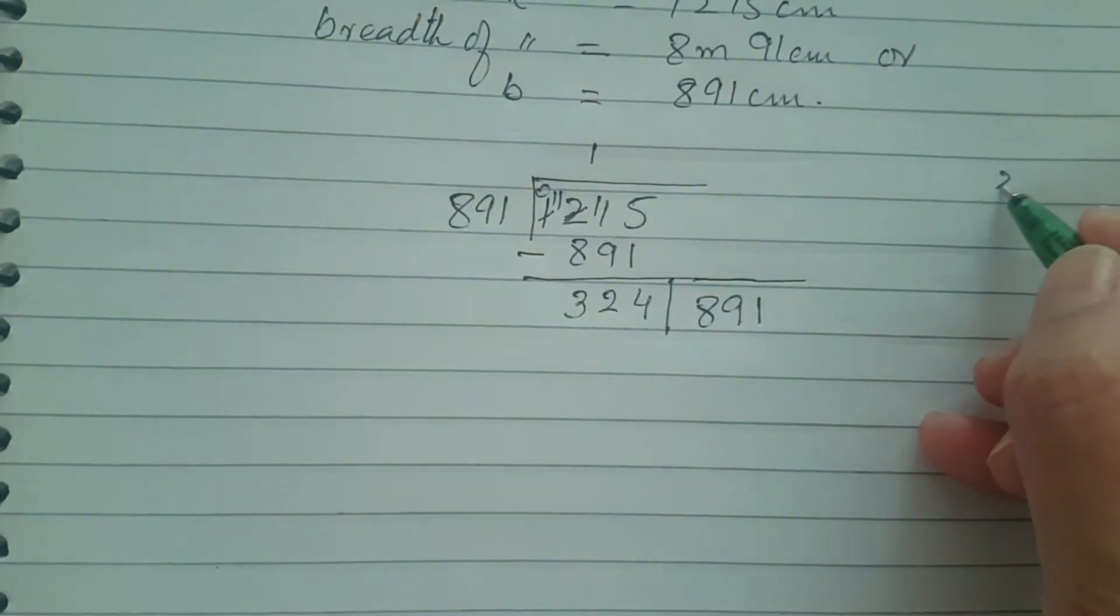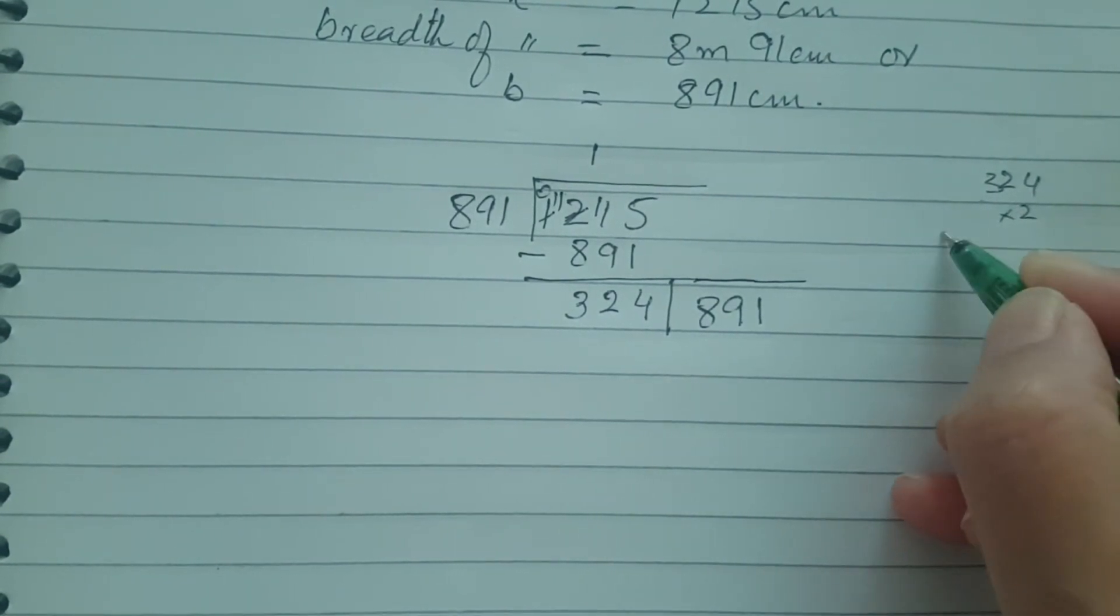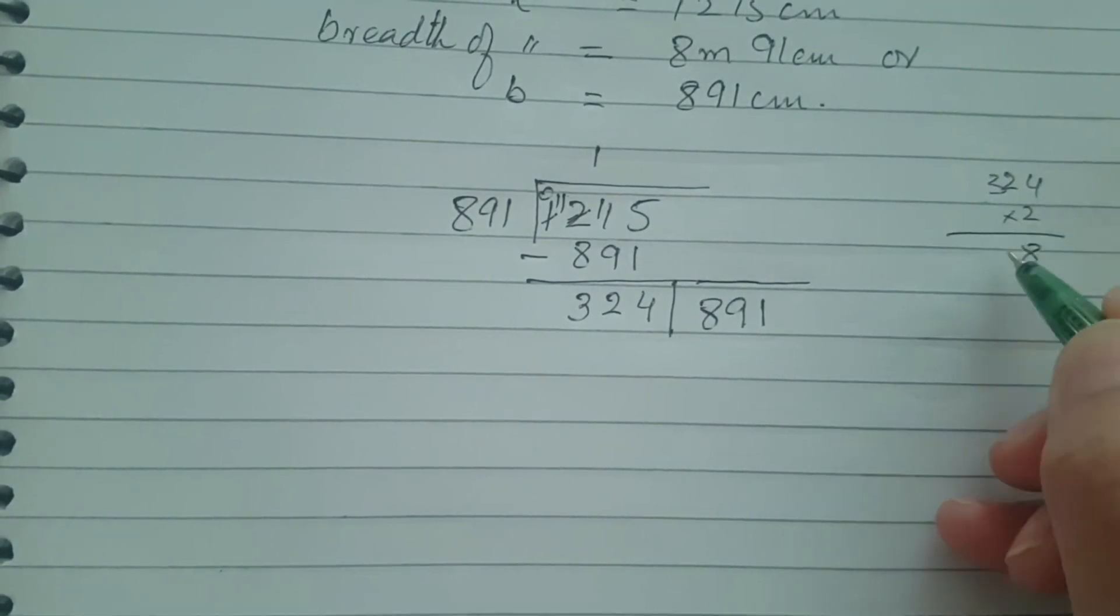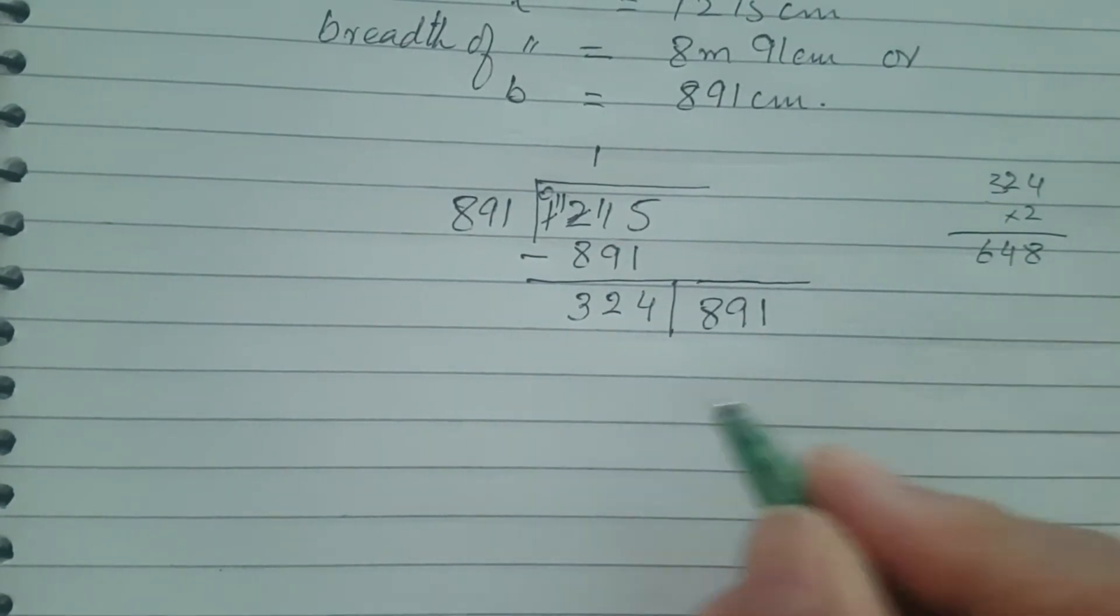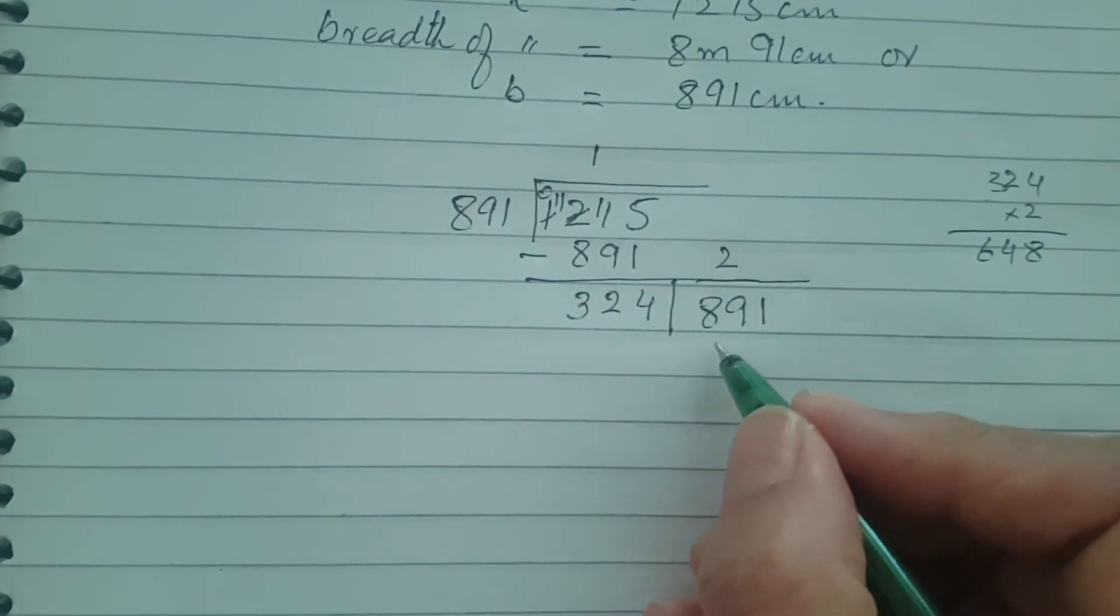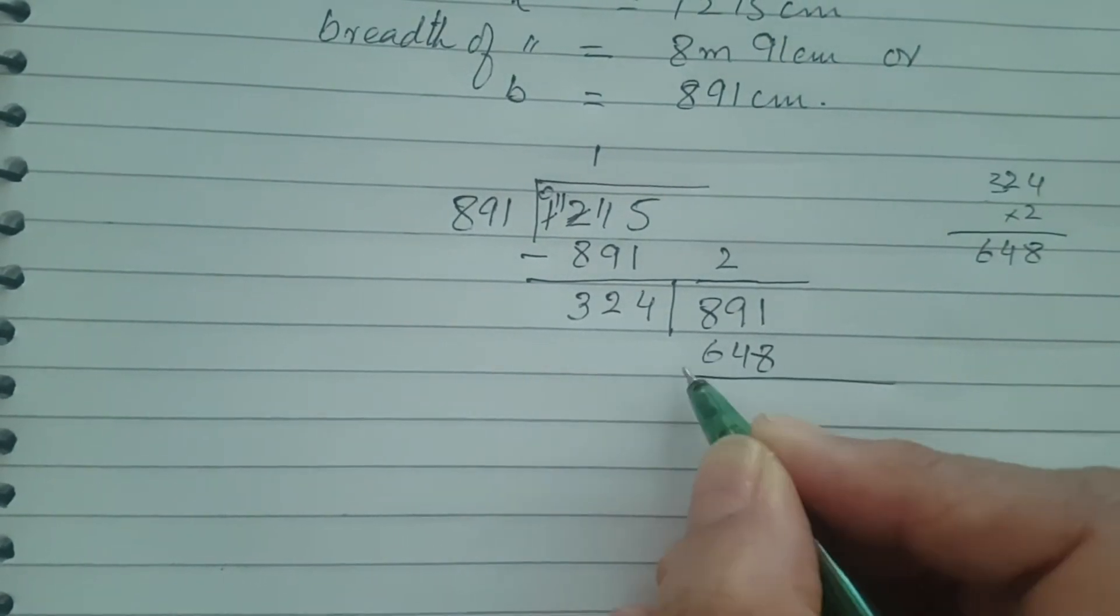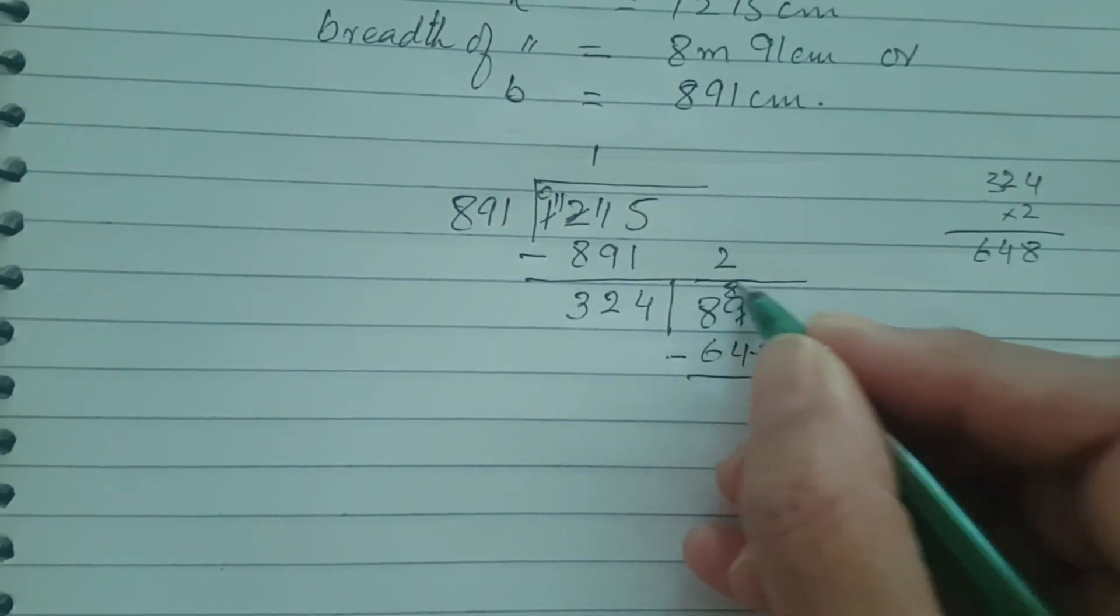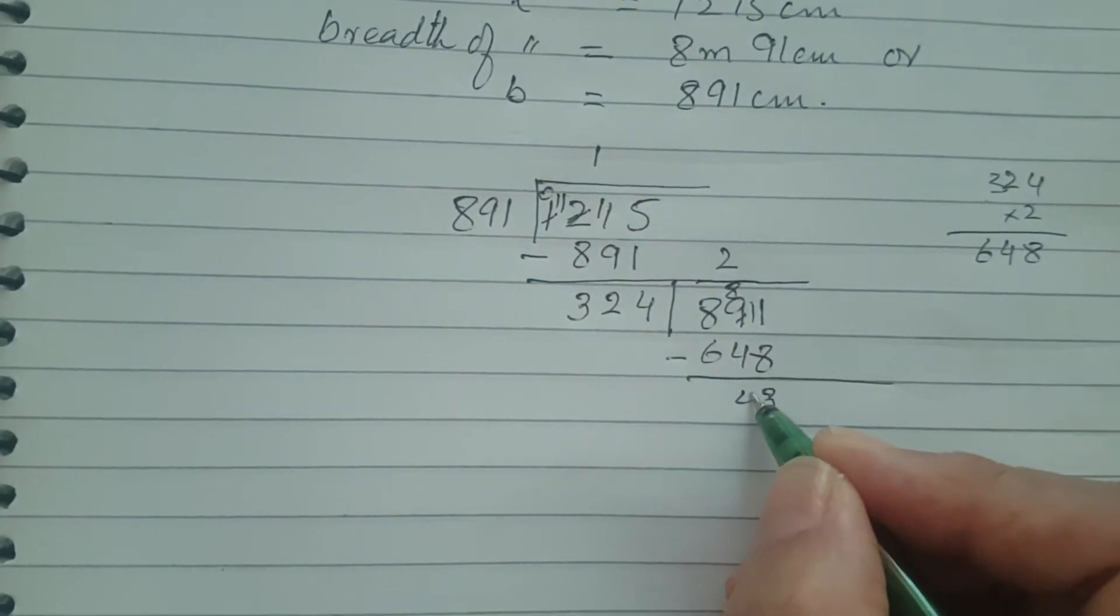324 two times. 2 times 4 is 8, 2 times 2 is 4, and 2 times 3 is 6. So 324 two times is 648. Do the subtraction at this step: 11 minus 8 is 3, 8 minus 4 is 4, and 8 minus 6 is 2. 243 is the remainder or your divisor now and the dividend is the previous divisor 324.